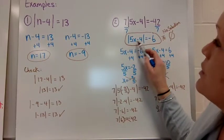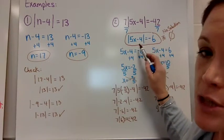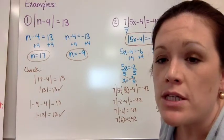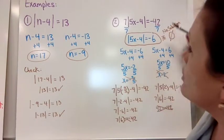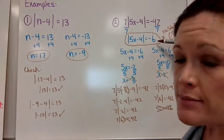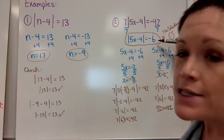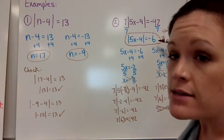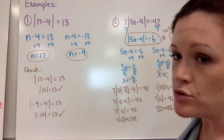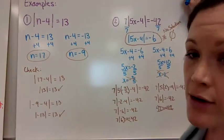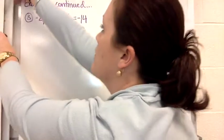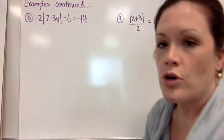No value of x would make sense here because the absolute value of an expression will never equal a negative number. So make sure when you're solving these that you're paying attention early on. If your absolute value symbol is equal to a negative number — just a negative constant — you can stop right there and say no solution. I really wanted to point out an example like that to show you.